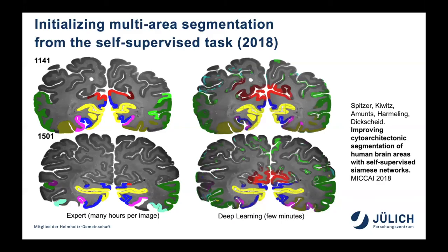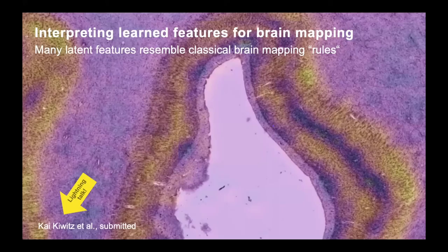Coming back to the segmentation task, we used this self-supervised pre-training of the Siamese network to initialize the multi-area segmentation network. This improved results by a significant margin. You can now see quite nice segmentation of the different visual areas in both sections shown, and in many others. The self-supervised task, which let the network see a large amount of image data, helped a lot in training these networks.